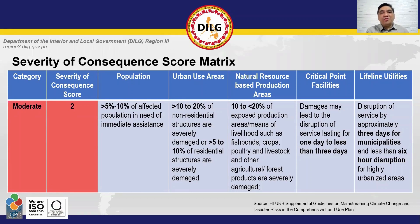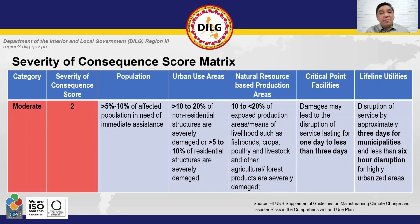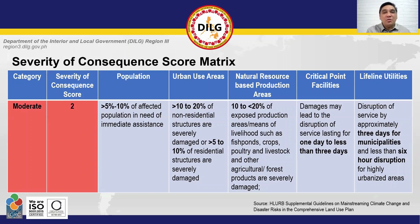For moderate severity of consequence, the range for population is more than 5% to 10% of affected population. For urban use areas, it is more than 10% to 20% of non-residential structures, or more than 5% to 10% of residential structures. For natural resource-based production areas, it is 10% to less than 20% of exposed production areas or means of livelihood. For critical point facilities, damages may lead to disruption of service lasting one day to less than three days. And for lifeline utilities, disruption of service by approximately three days for municipalities, and less than six hours for highly urbanized areas.